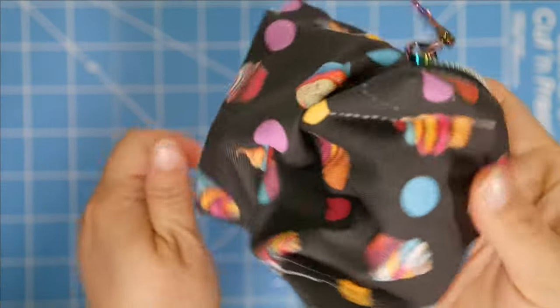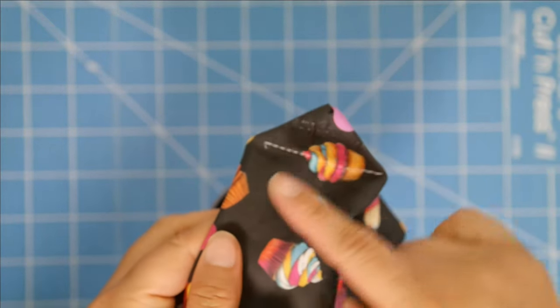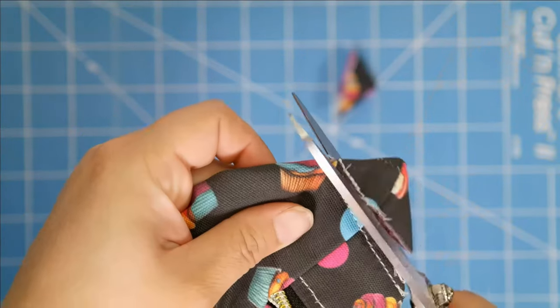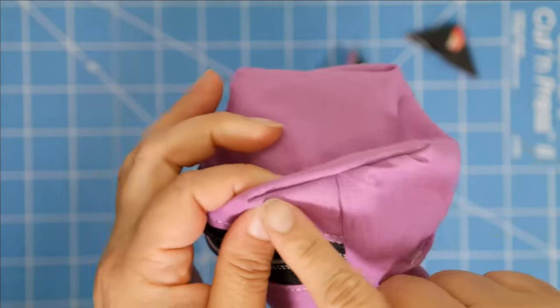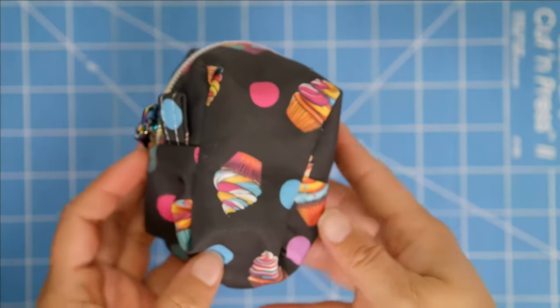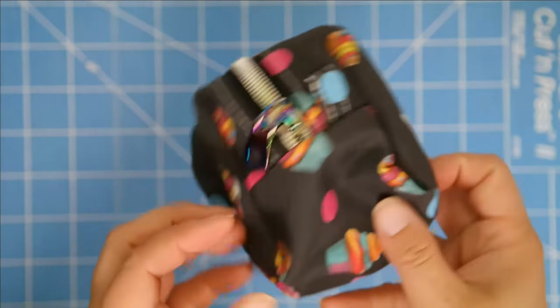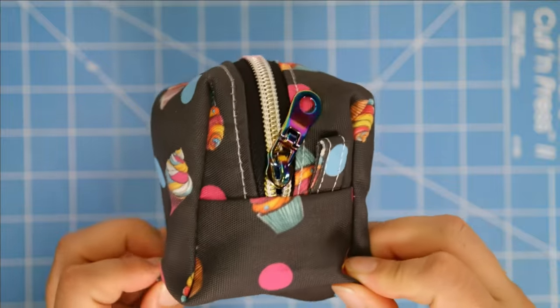Once you turn it right side out, you will then box the corner on the exterior panel. Cut the ends. Turn the pouch inside out. Sew along the seam. Turn the bag right side out. And there you have it! Again, if I were to make this bag, I would move the keychain tab towards the zipper.